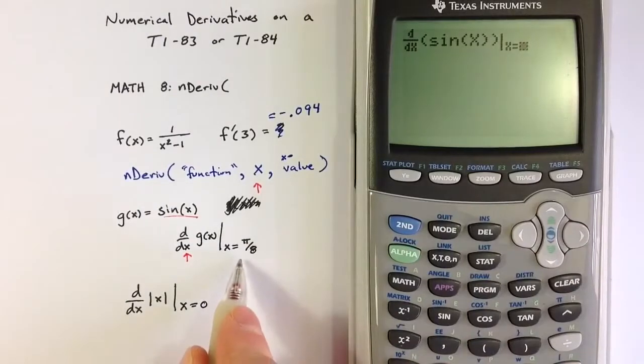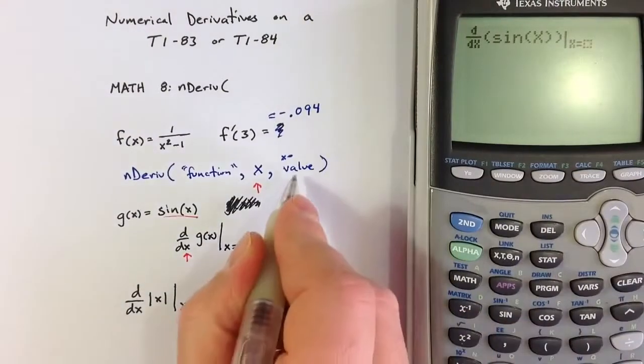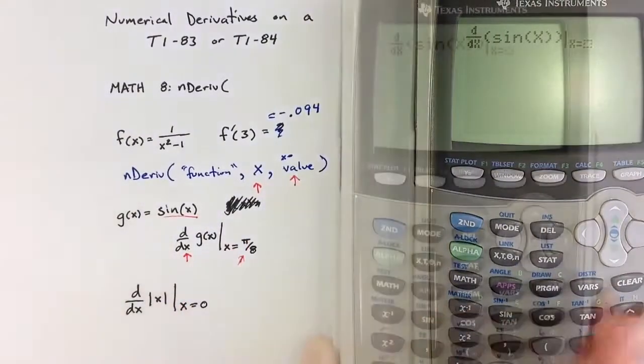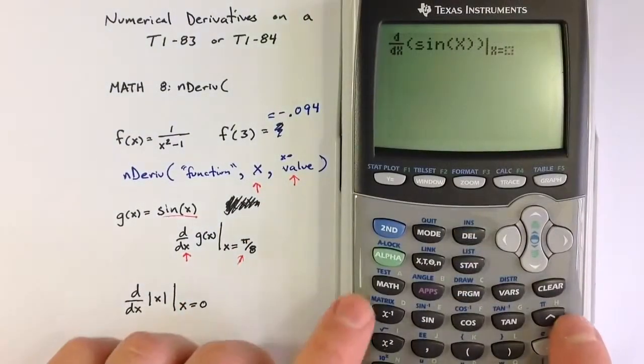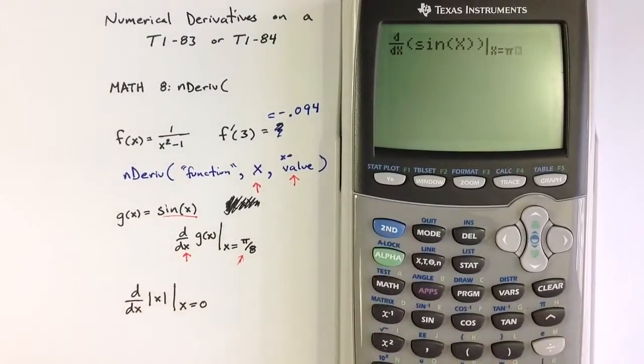If I want to find the value of the derivative at pi over 8, that corresponds to the x value, and so I can enter pi second and then pi over 8.